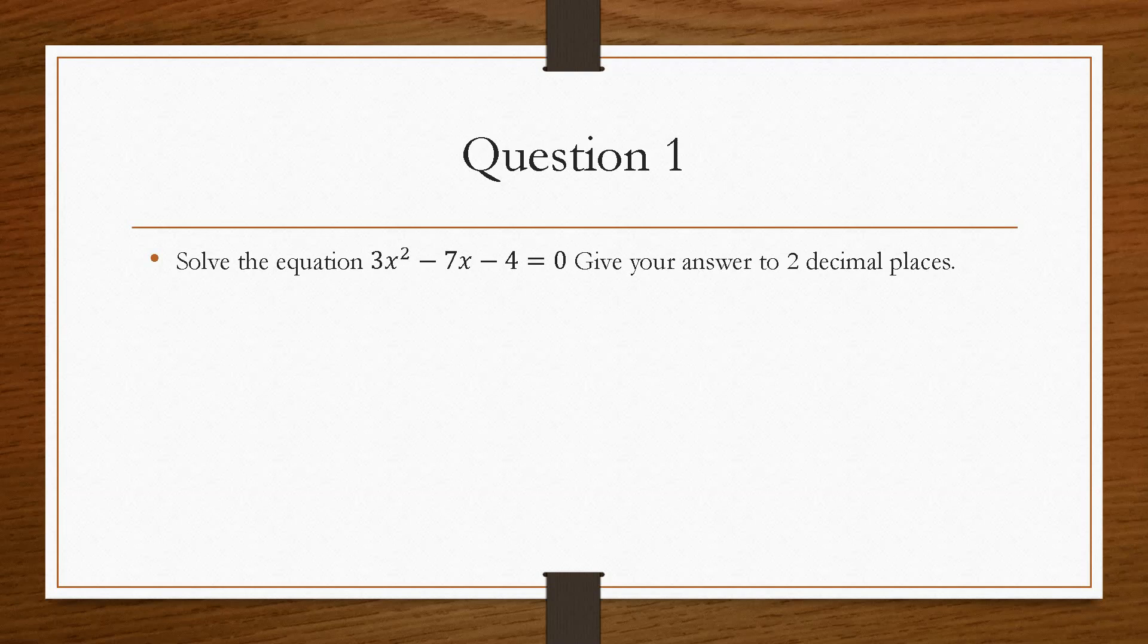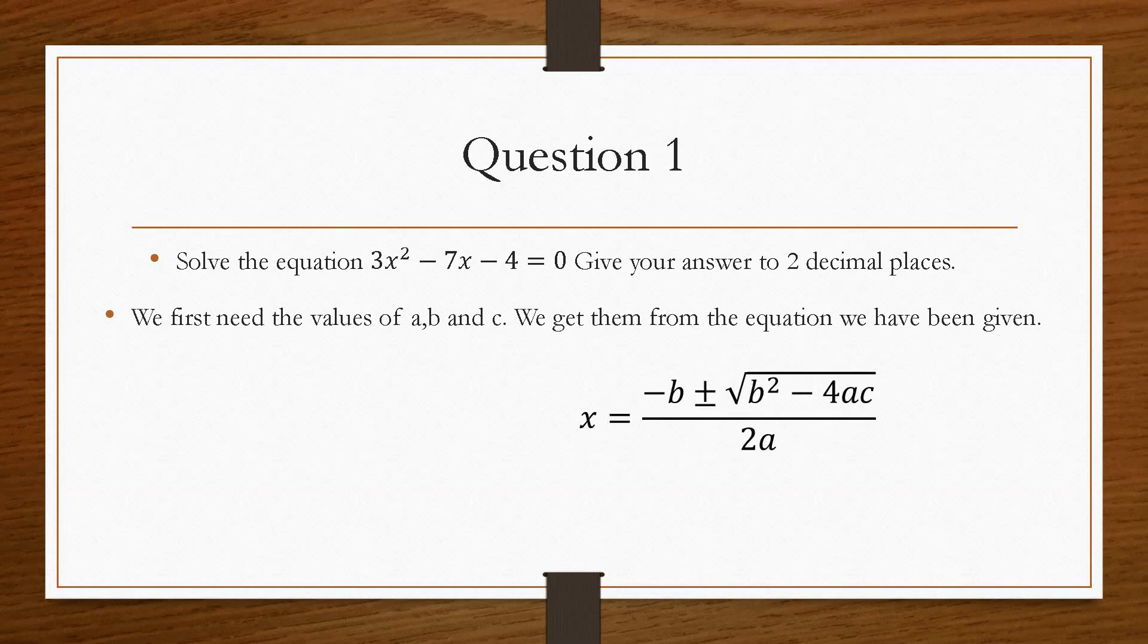So it's asking us here to solve 3x squared minus 7x minus 4 and give your answer to two decimal places. So the first thing we need to do is obtain the values of A, B and C to substitute into the quadratic formula.